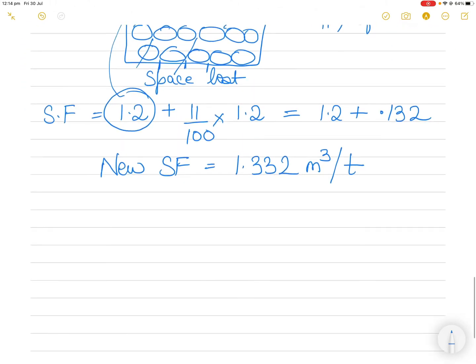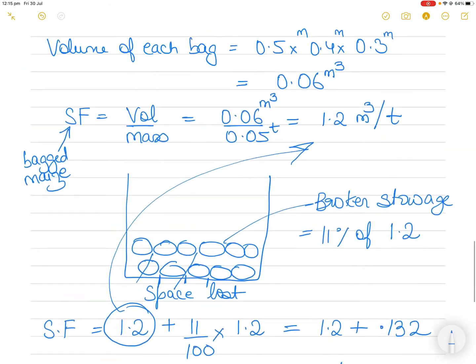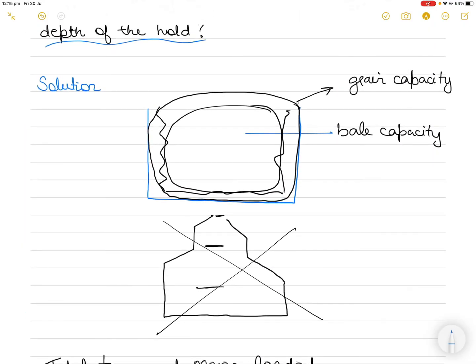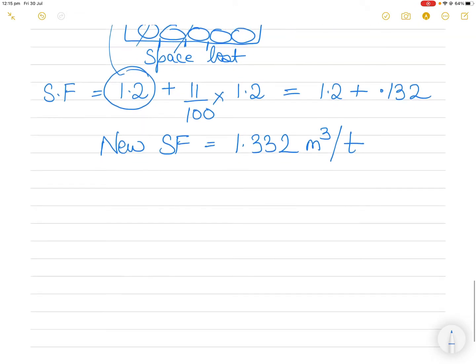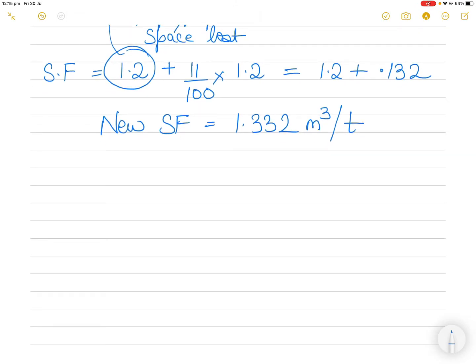When loading bagged cargo, you must consider the bale capacity, not the grain capacity. Bagged cargo cannot be loaded into the spaces occupied by stiffeners and platings — it can only go into the bale capacity space. Loose grain can go anywhere including those spaces, which is why grain capacity is used for loose grain.